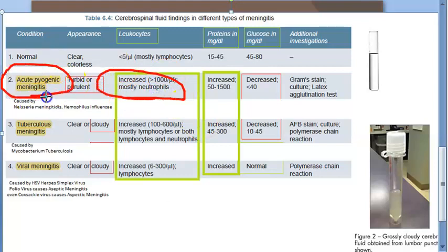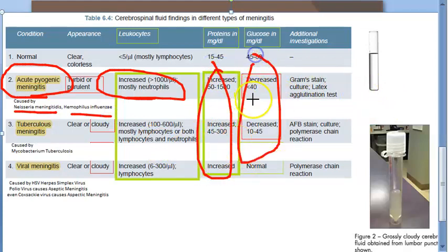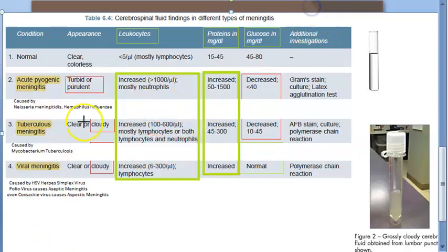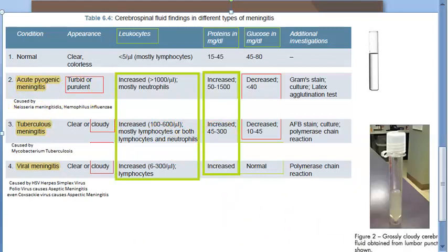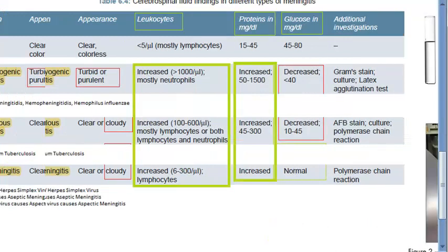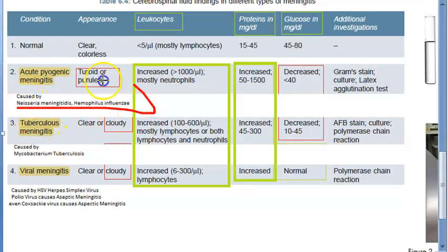What can cause pyogenic meningitis? Neisseria meningitidis and Haemophilus influenzae. To summarize: proteins will always increase if there is infection in the CSF. Glucose will decrease if there is a bacterial infection. Neutrophils indicate acute pyogenic meningitis. If it is tuberculosis, it will show lymphocytes instead. The causative organisms here are Neisseria meningitidis and Haemophilus influenzae.